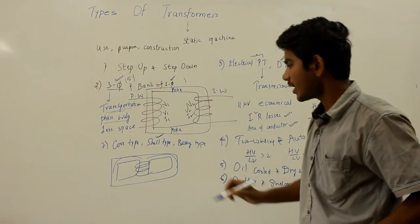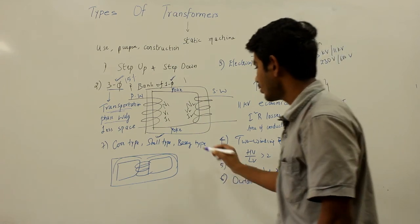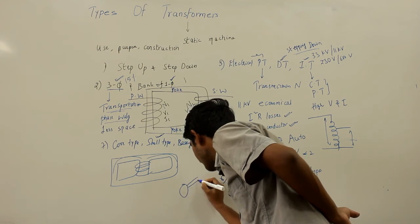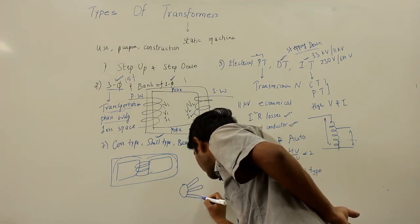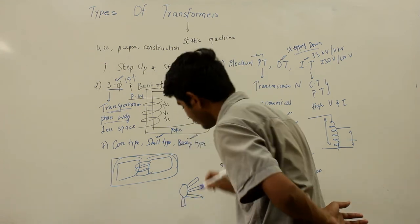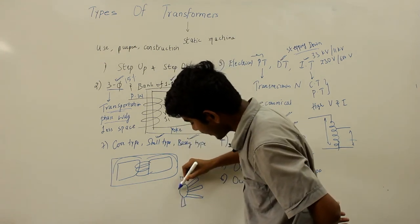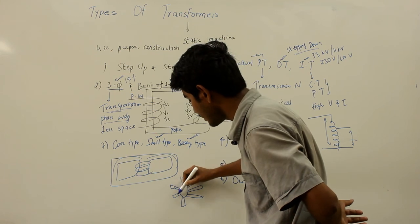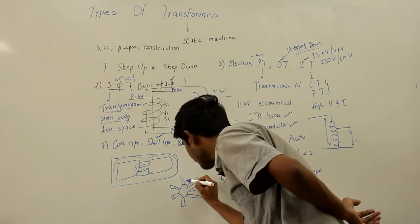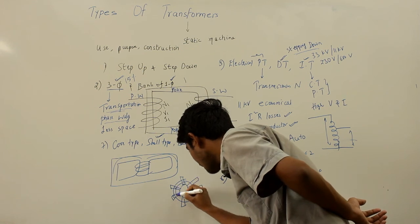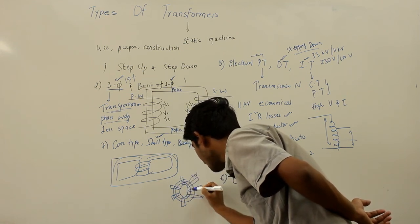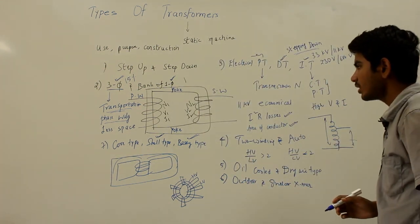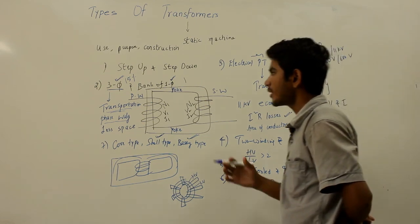The berry type transformer looks like the spokes of a wheel and is housed in tightly fitted metal sheet tanks. The high voltage winding and low voltage winding are arranged in this spoke-like formation. These are the types of transformers classified depending upon their purpose, use, and construction.